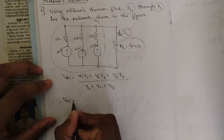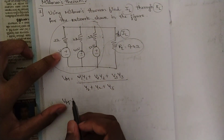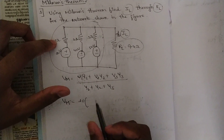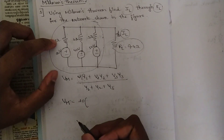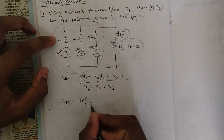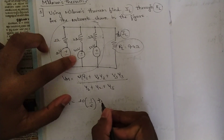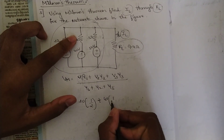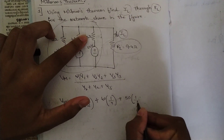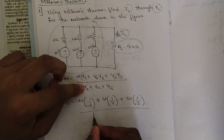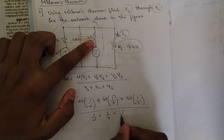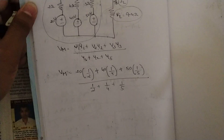VM equals V1, which is 20 volts, multiplied by Y1 — admittance is the reciprocal of resistance, so 1/2. Plus 40 multiplied by 1/4, plus 50 multiplied by 1/5. This is divided by the admittances: 1/2 plus 1/4 plus 1/5.